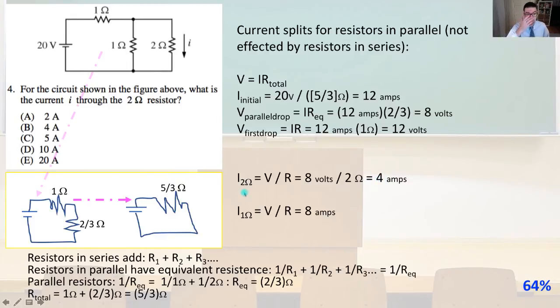So what's the current going through I2, the two omega resistor? That's going to equal the voltage total divided by the resistance of that resistor. So it's going to equal 8 volts, which is the parallel resistor's drop. 8 volts divided by 2 omega. That's 4 amps. And if you're curious, the current going through the 1 omega is going to be the voltage drop across those two in parallel divided by its resistance. So that would be 8 amps going through this resistor if you're curious. But it asks us about the 2 omega resistor and that is answer B.